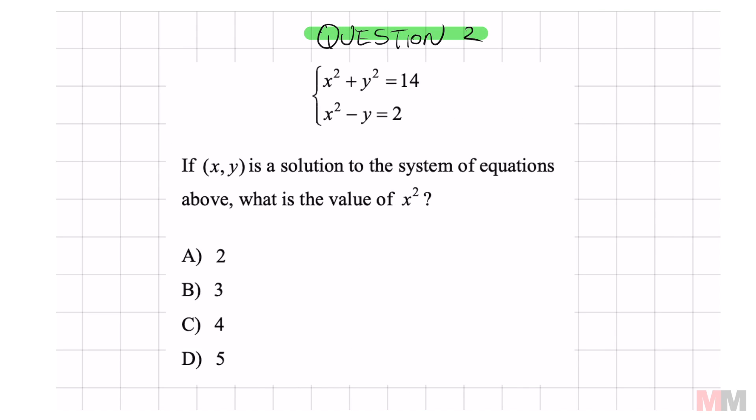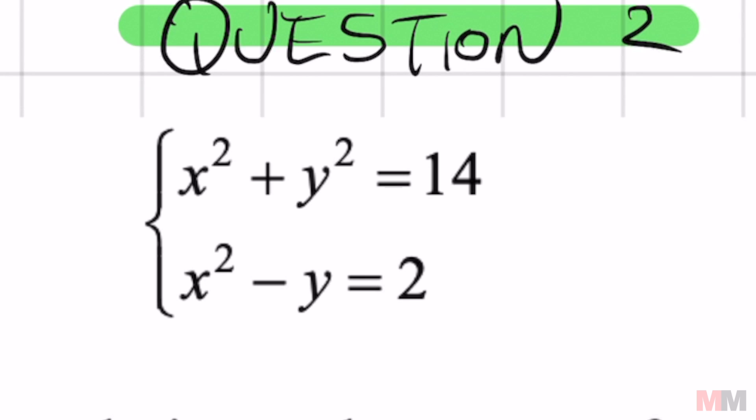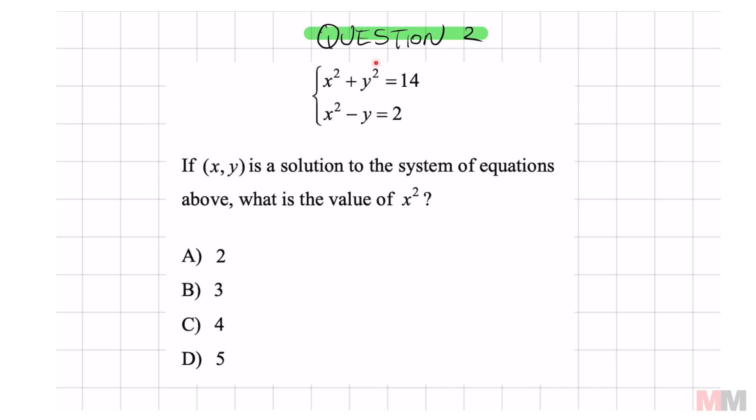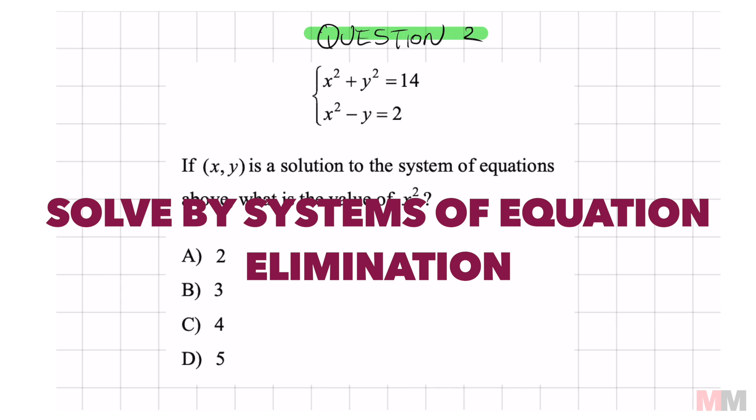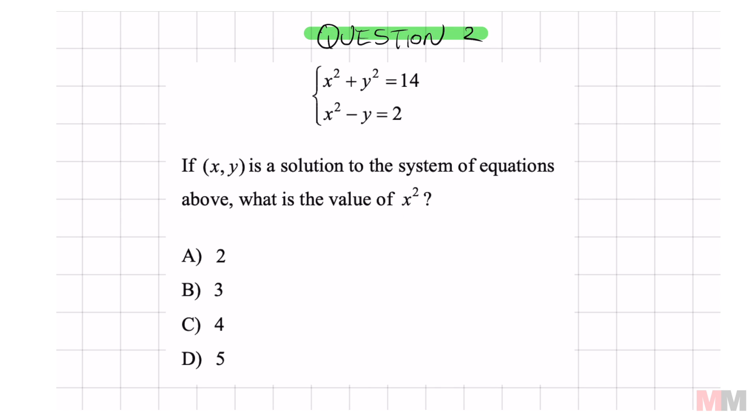Question 2. We're trying to find the value of x squared. And the first time I did this, I almost fell for it. I almost eliminated these. But you cannot do that. You can't do that because they're not like terms. This one's got y squared. This one's got y. So be careful. But we do have to eliminate. We do have to eliminate. To find x squared, my strategy is to eliminate x squared first.